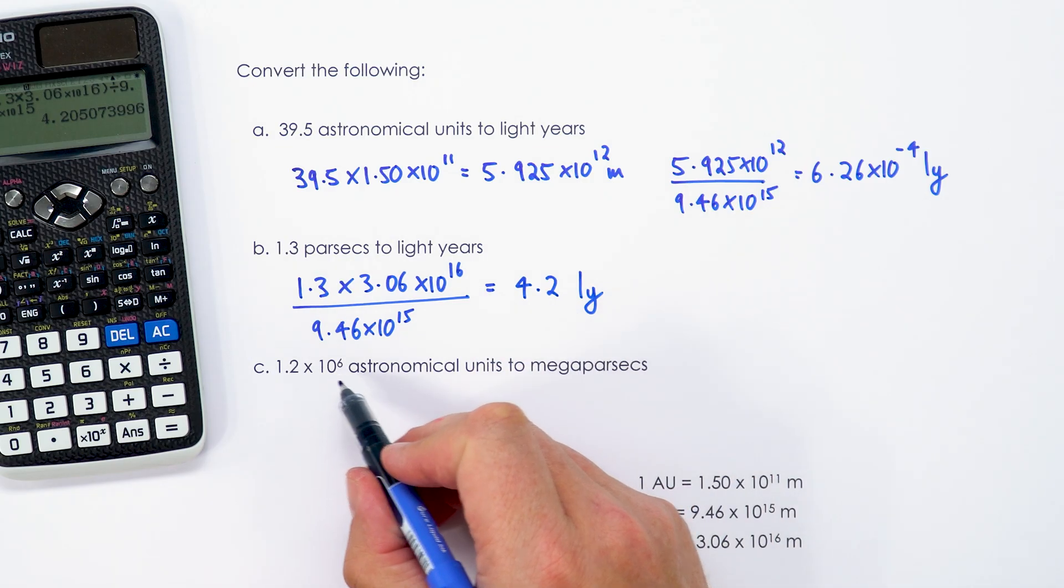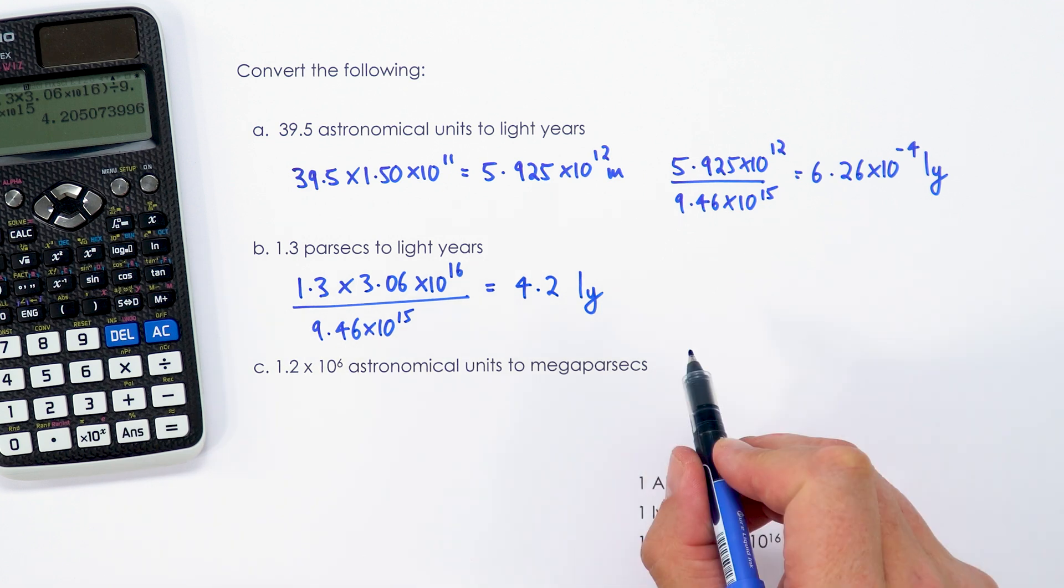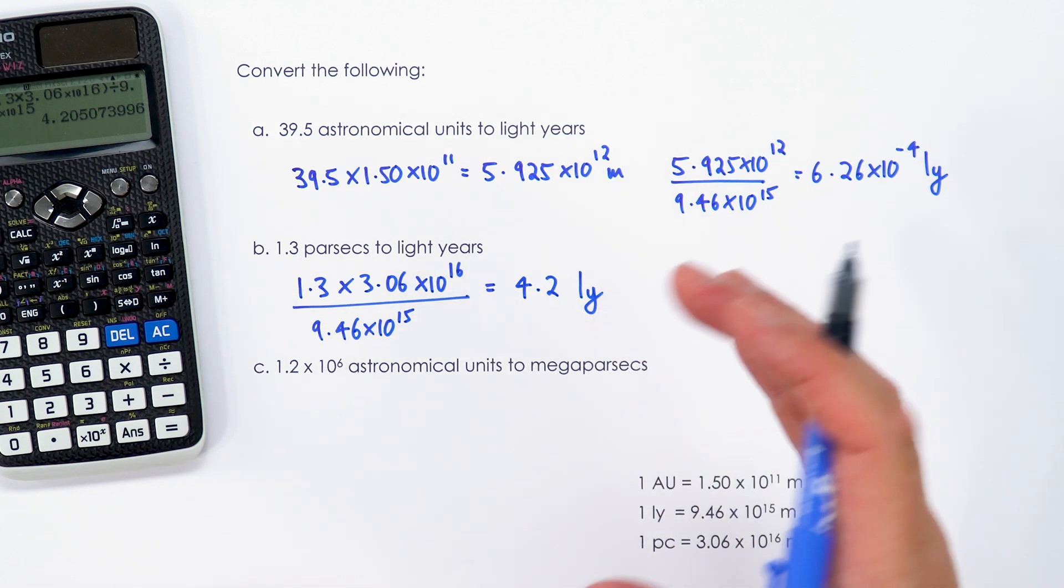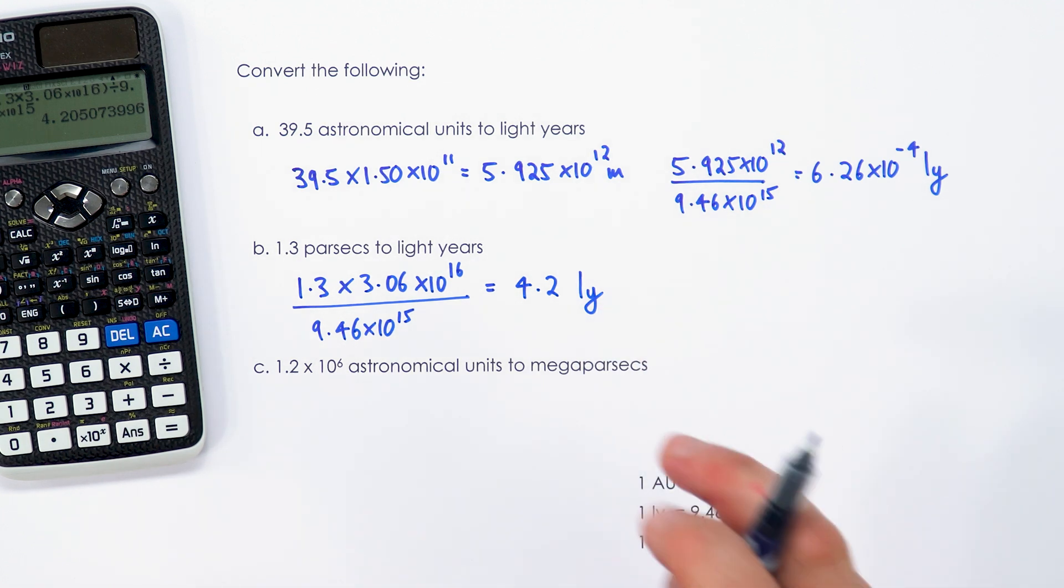And then the next one, we've actually got something which is slightly different to just a parsec. We've got a megaparsec, which is often used for big distances. So again, I'm going to convert from AU into metres and then divide by an appropriate number to get the final answer in megaparsecs.